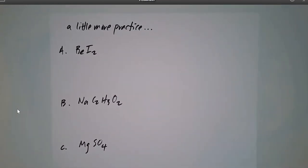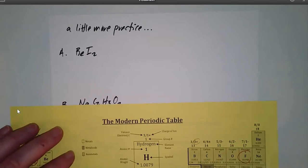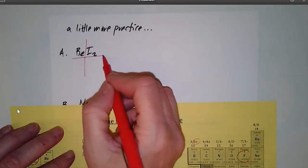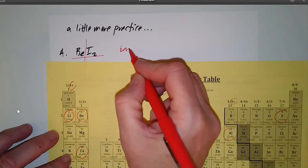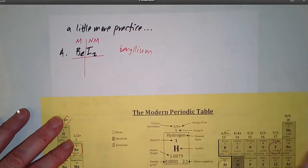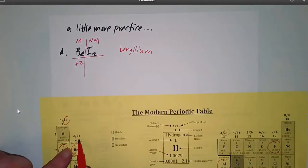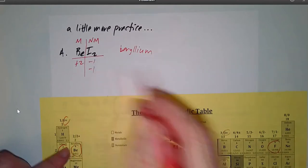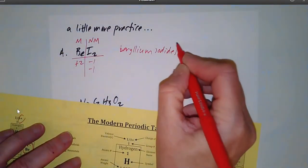It wouldn't be a bad idea to try these yourself before watching me do them. Next: BeI₂. Be is beryllium — that's my metal. Iodine is my non-metal, so this is the simple kind. I change the ending of iodine to iodide. Beryllium has a charge of plus two and iodine has a charge of minus one, with two of them. The name is beryllium iodide.